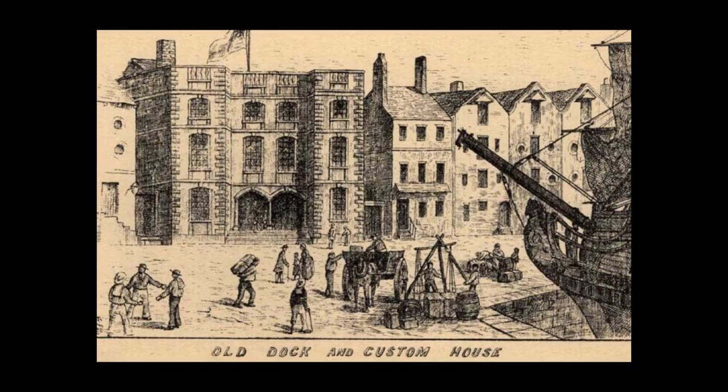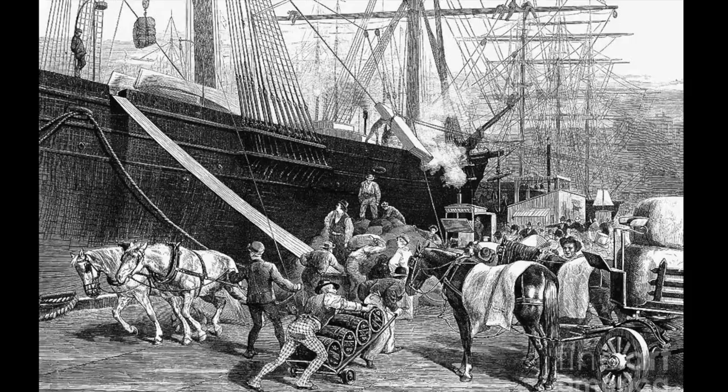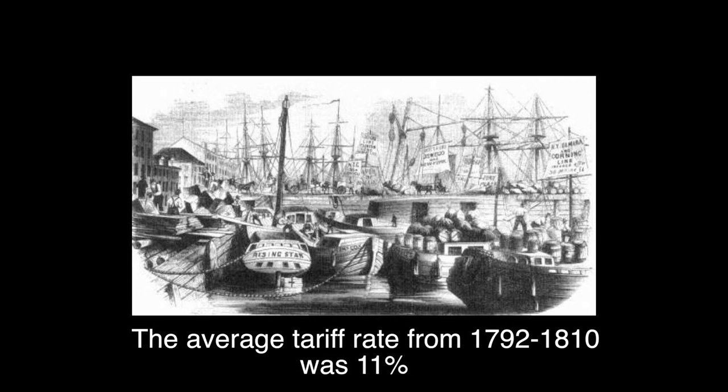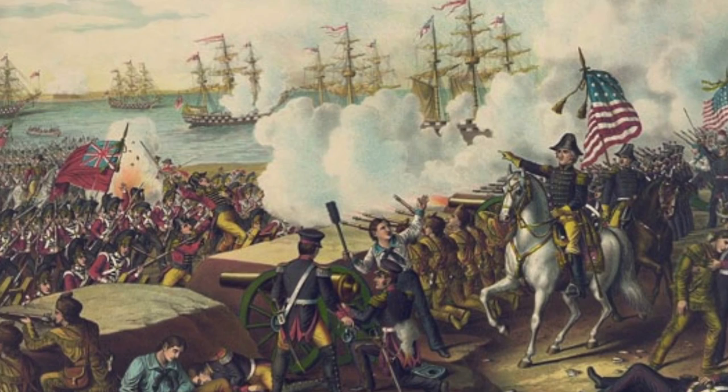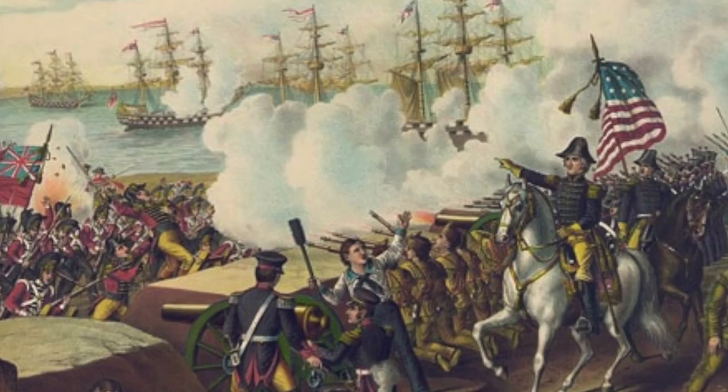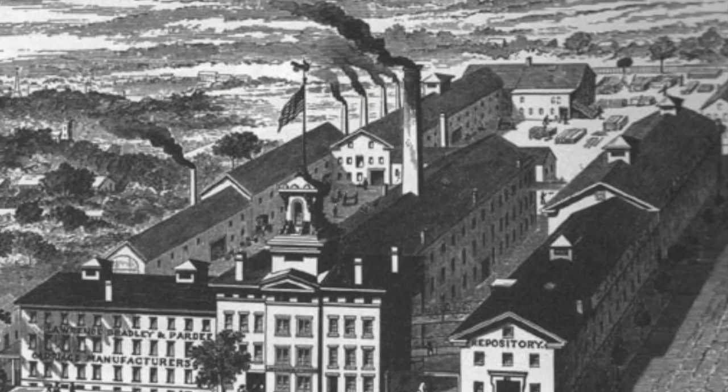In spite of some early criticisms, a move toward moderate protective tariffs became the economic policy of the nation until 1812. The average tariff rate from 1792 to 1810 was about 11%, in keeping with proposals made by Hamilton in his report. During the War of 1812, there was no real demand for a protective tariff, as foreign trade was blocked during the conflict, decreasing the importation of manufactured goods. As a result, domestic manufacturing expanded due to a virtually exclusive home market.